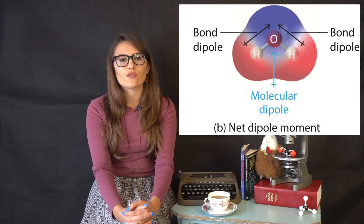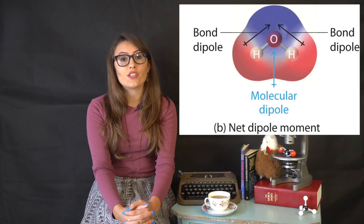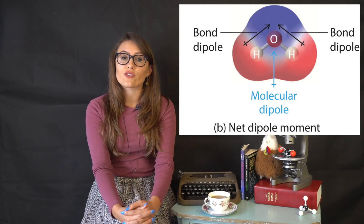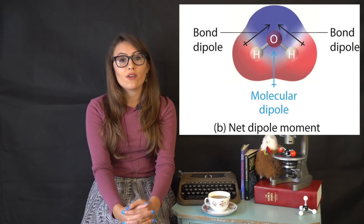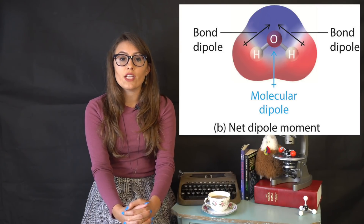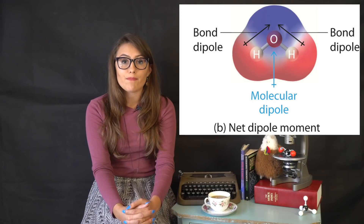Let's try to determine the polarity of water using these steps. First, we need to identify the electron and molecular geometry. We can see that H2O has a tetrahedral electron geometry and a bent molecular geometry. So here, we see that the OH bonds are angled downward with the lone pairs on top.